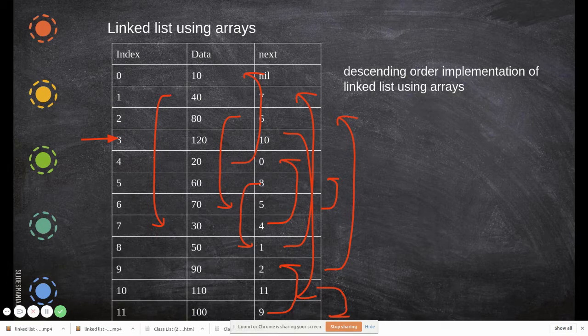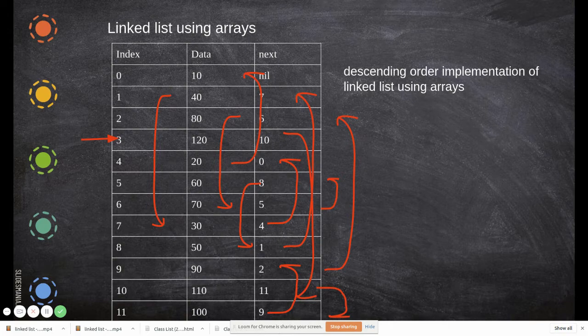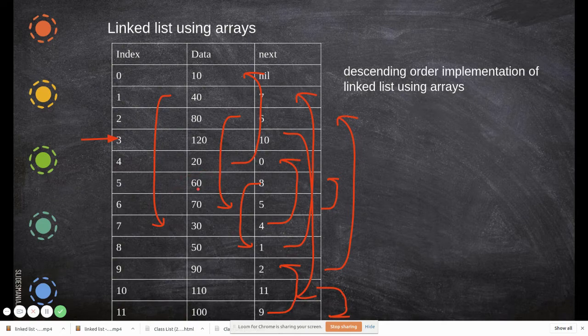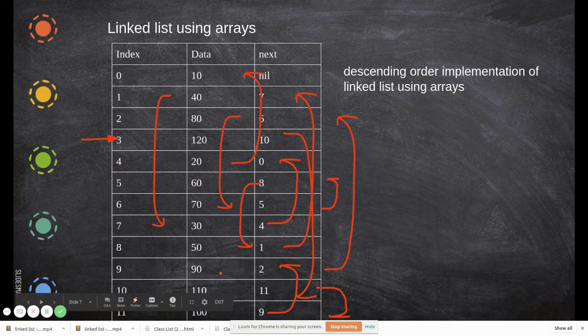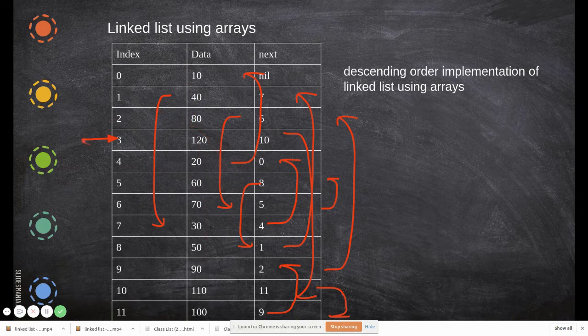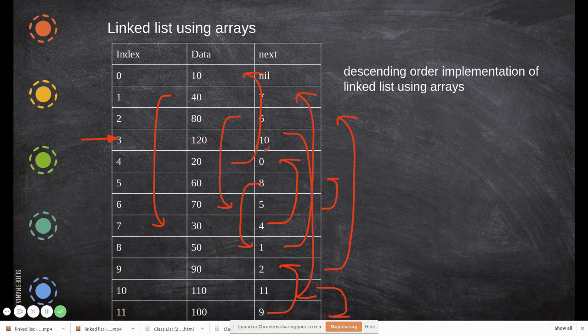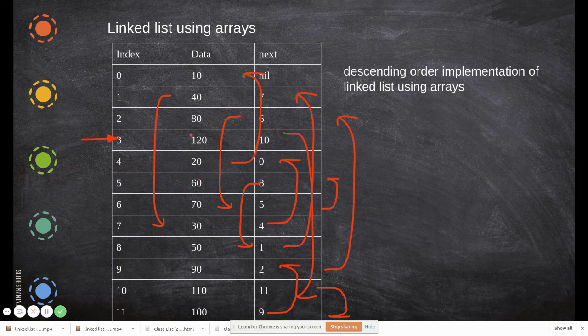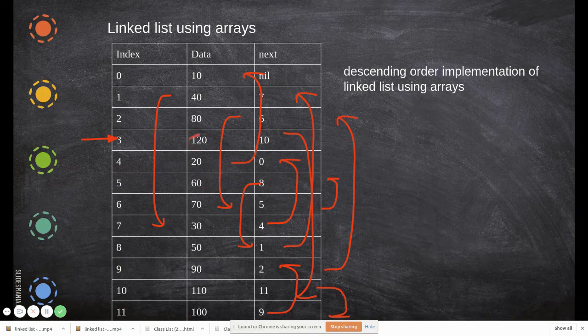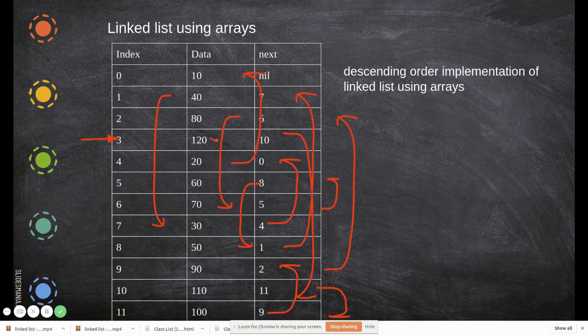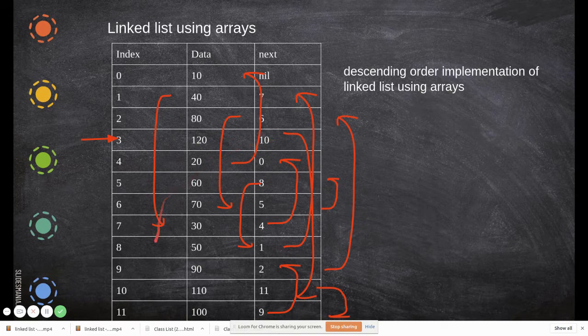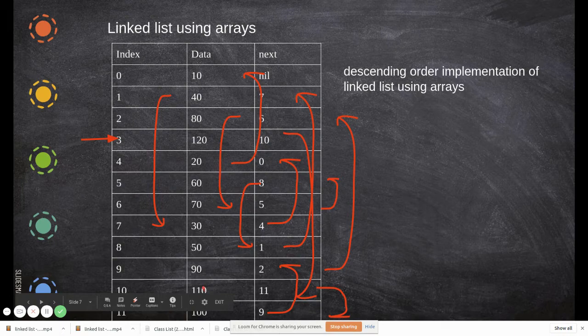One thing is the drawback with the linked list is you cannot search in the middle. For example if I want to find the element whether 60 is in my linked list or not, then what you have to do? You have to catch this starting point and then according to the pointer you have to move. From here we would check whether since our search location is 60, you have to check whether 60 is equal to 120. No.